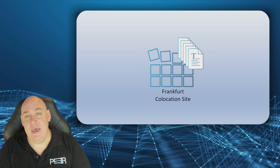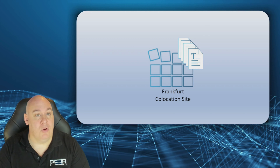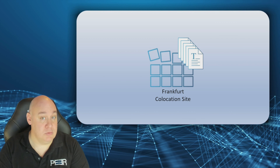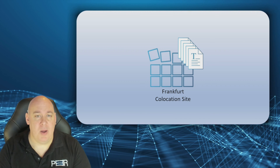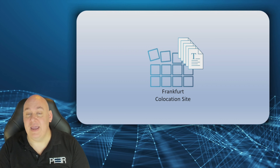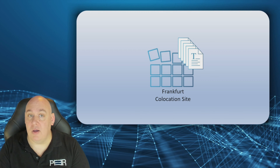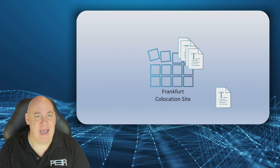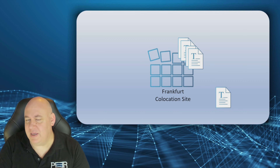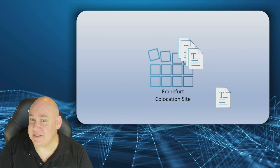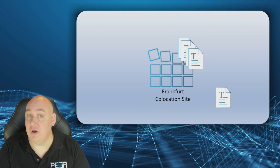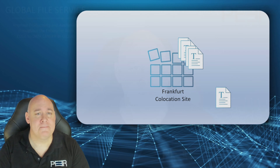Dennis can set controls over how many versions of each file to keep and for how long, to control the disk space required and rein in the ongoing cost to the business. This means that if hit by ransomware, Dennis can easily restore a version of the file from a point in time before the ransomware struck, and rather than pay some evil individual a bunch of bitcoin for the decryption key and hope for the best, he can simply overwrite the corrupted files with the last good version.